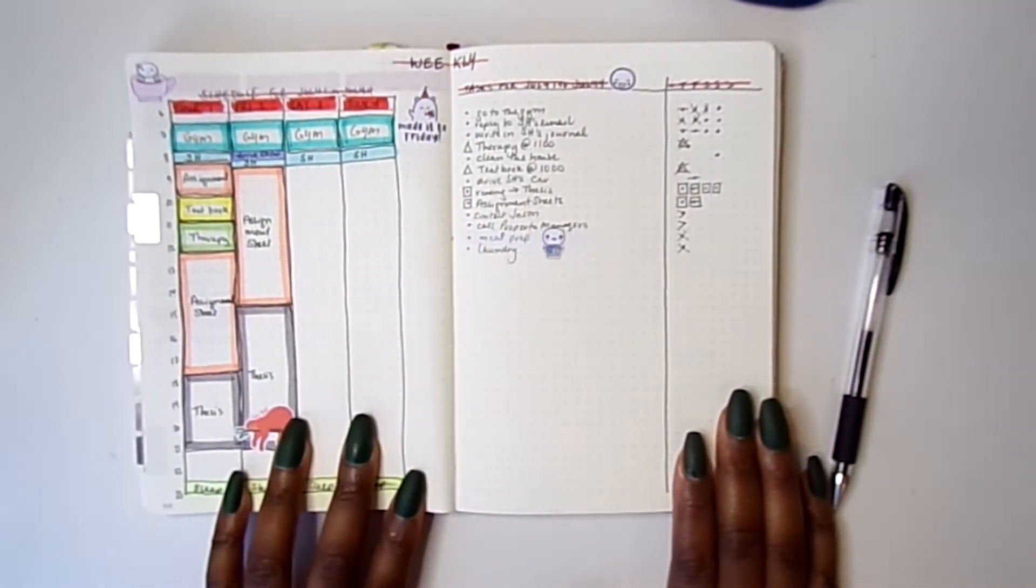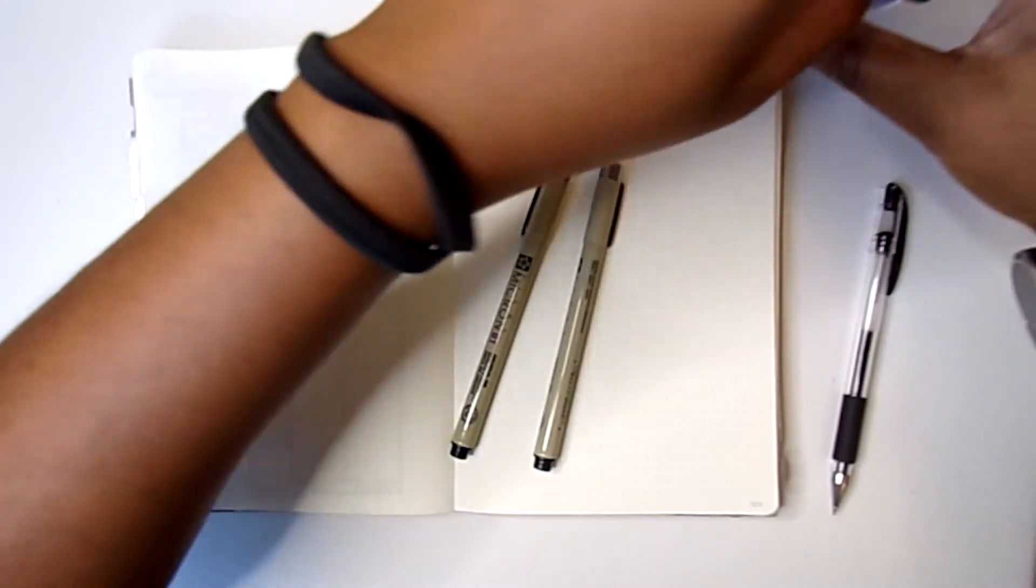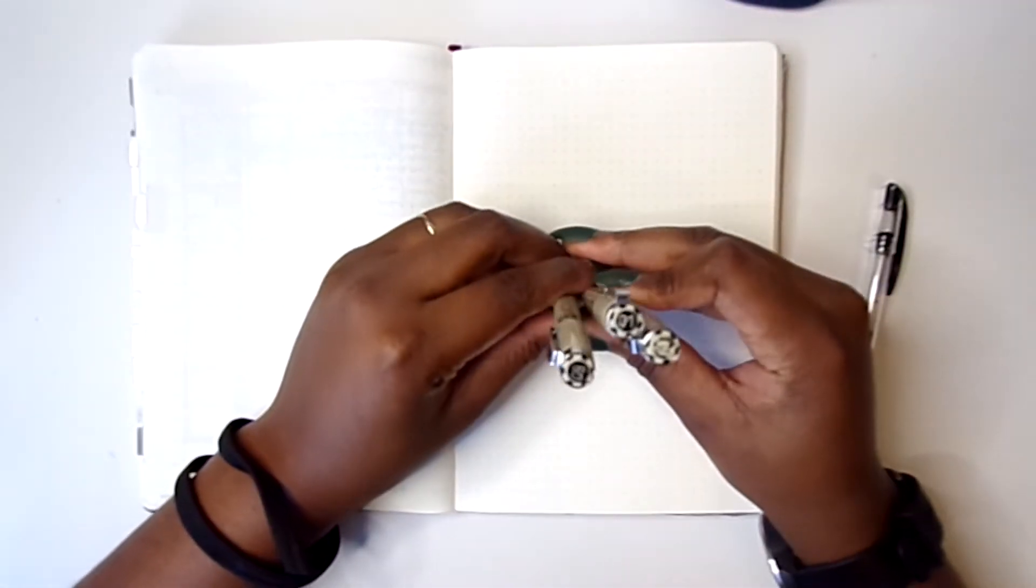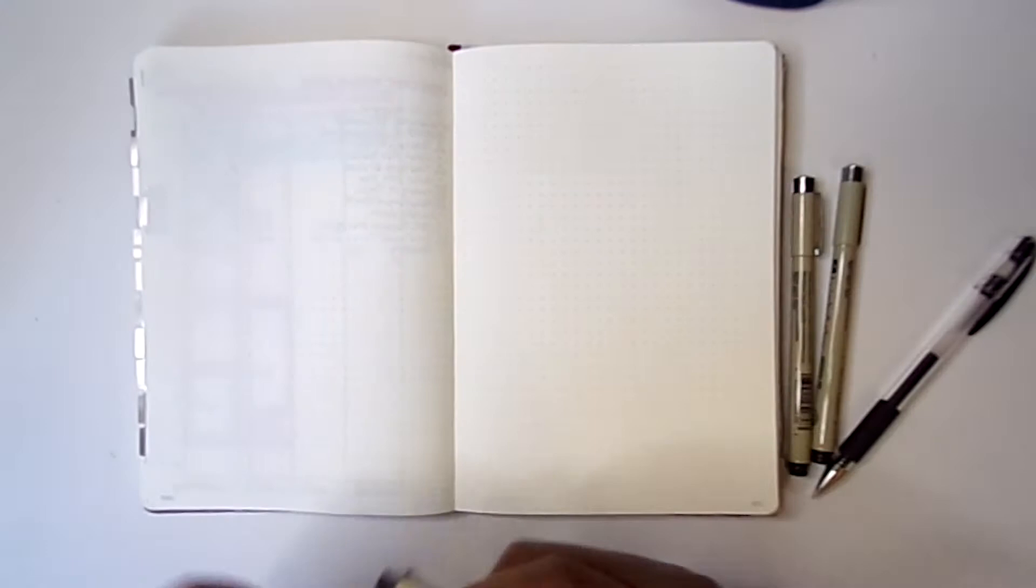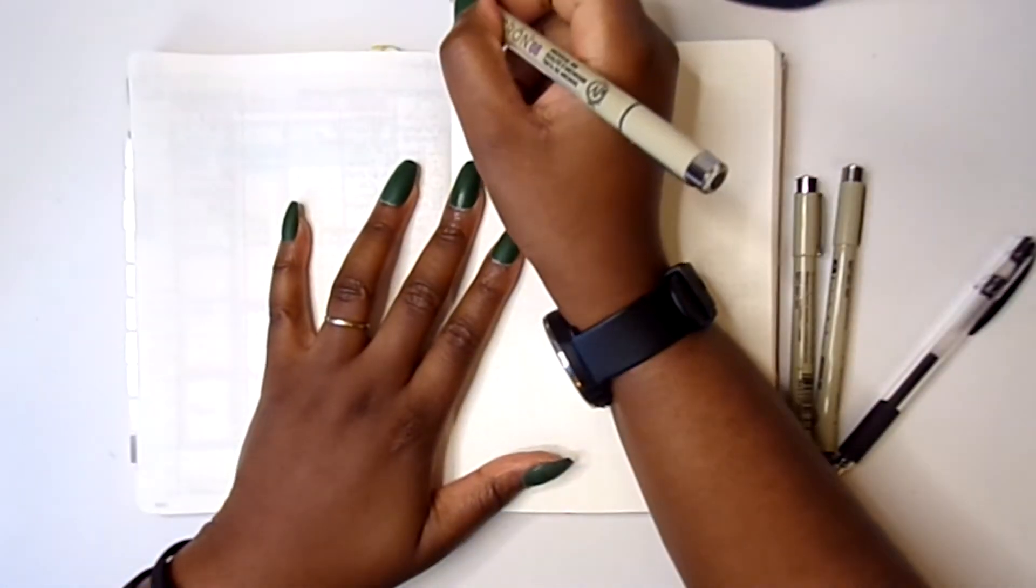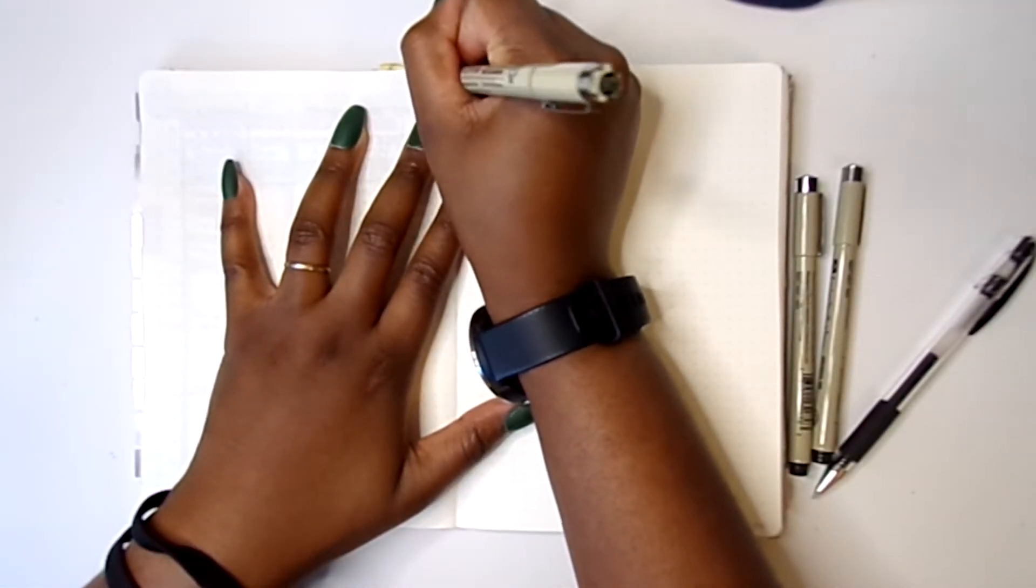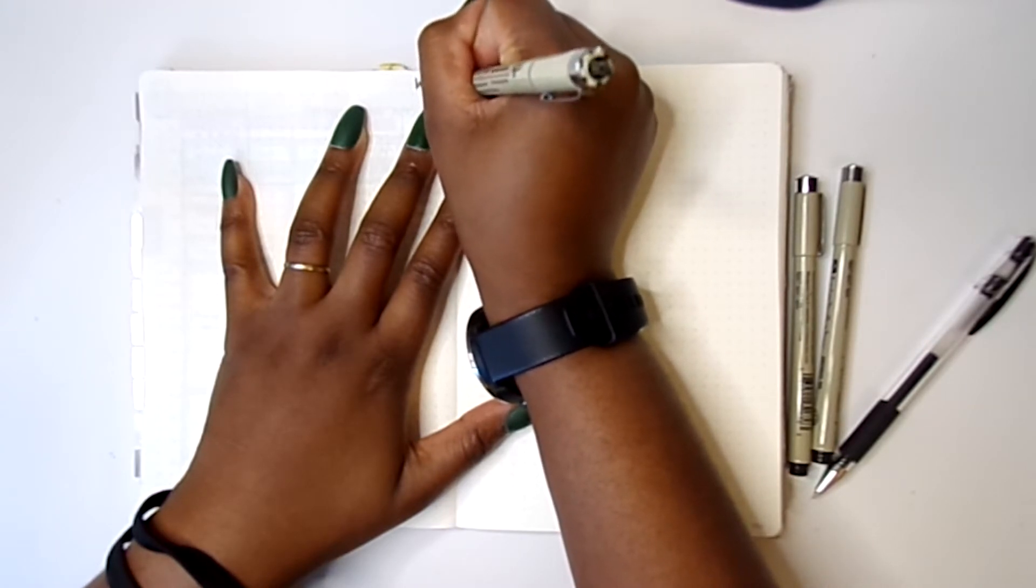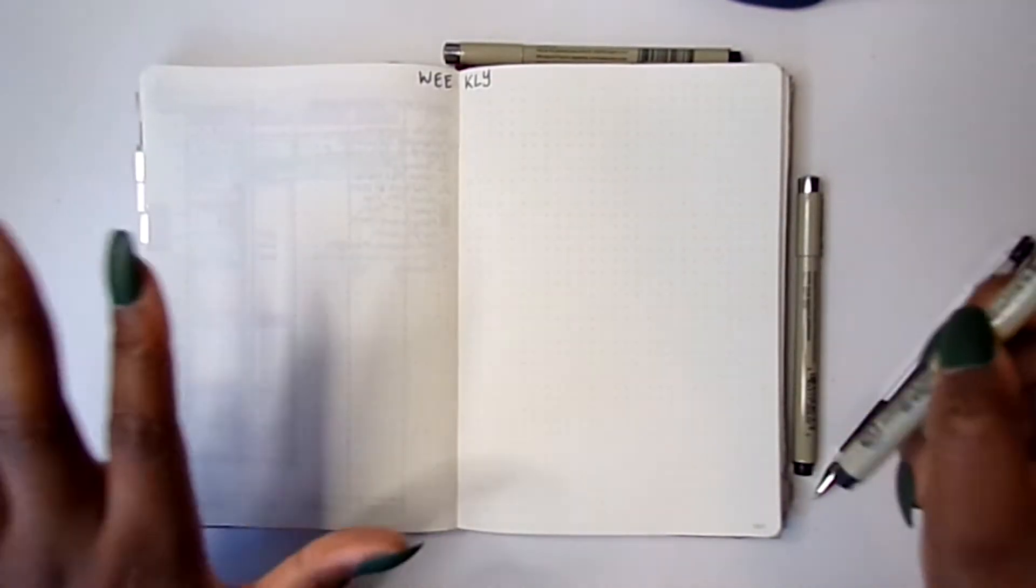We're going to turn the page. I'm going to use my regular Pigma Microns in sizes 01, 05, and 08. The 08 is for the header. I haven't been using stickers a lot lately. I don't know why—it comes and goes. Sometimes I feel like it, sometimes I don't.